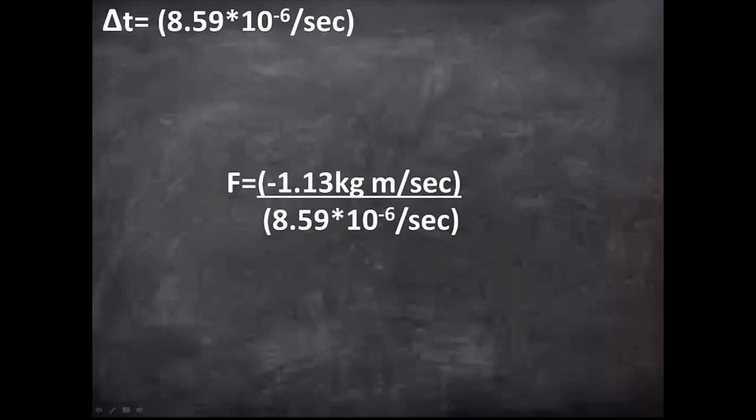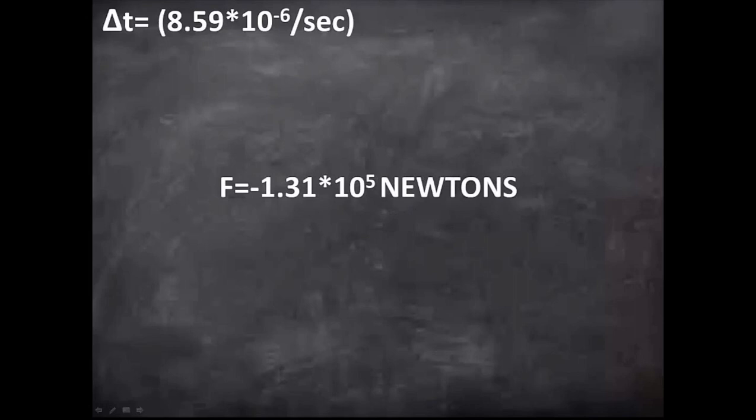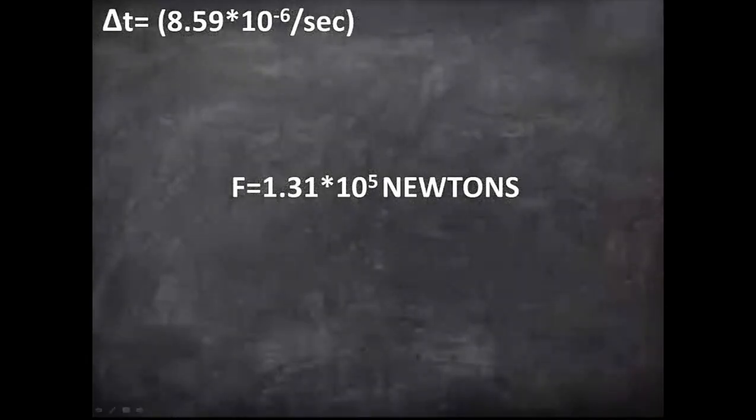Now we substitute in our value for time, and dividing we get this. Negative 1.31 times 10 to the fifth kilogram meters per second, per second. And that is the same as newtons. So negative 1.31 times 10 to the fifth newtons. This represents the force in the direction of the bullet, and since the plate applies the force back, we simply take the inverse, giving us 1.31 times 10 to the fifth newtons. And let me tell you, that is a lot of newtons. And now just for the convenience of us in North America, this means that the plate is applying a force of 29,500 pounds back to stop the bullet. Don't forget this number. But for now, onto the next gun.